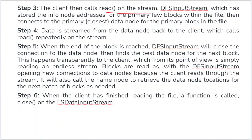Whatever data we get from the data node is sent back to the client. The read function is called repeatedly — if the file is fetched from the first location, the task is complete; otherwise it goes to the next data node with the same read function. When the end of a block is reached, the DFSInputStream closes the data node connection and finds the best data node for the next block, then starts fetching files from that next block.